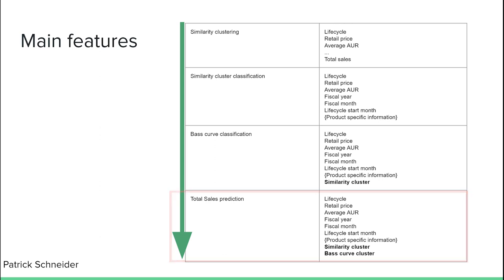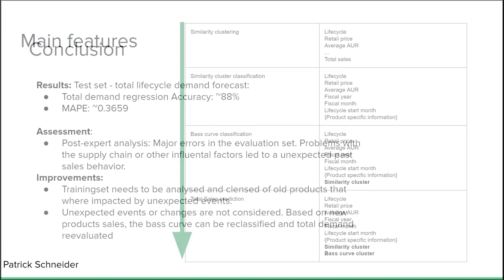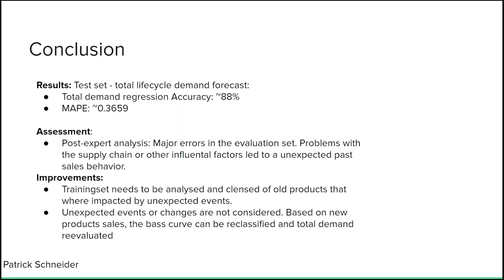The main challenge in this model pipeline is to find similarity features of old to new products. The following main conclusions came from this project: the prediction for the total demand had an accuracy of 88%, as well as a MAPE of 37%. The dataset is not publicly available, which makes the resulting metrics hard to evaluate. This approach competed against other new product demand prediction approaches, where it achieved the highest predictive accuracy and was chosen by the customer. Customer-based post-expert analyses showed that significant errors were backtracked to old products in the evaluation set that suffered from supply chain problems or other influential factors, which led to unexpected past sales behavior.